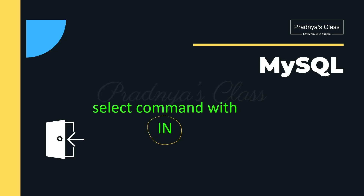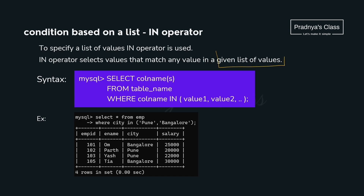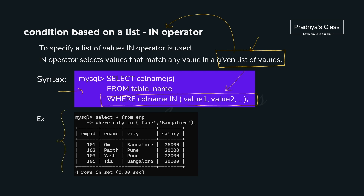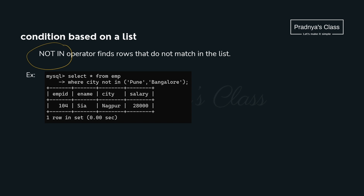It's time to check out the IN and NOT IN operators with the SELECT statement. If there is a given list of values and you need to match any value from the list, use the IN operator. Syntax: WHERE column_name IN (value1, value2). For example: SELECT * FROM employee WHERE city IN ('Pune', 'Bangalore') — all records where city is Pune or Bangalore are displayed. NOT IN is the reverse — it excludes records matching the given list.